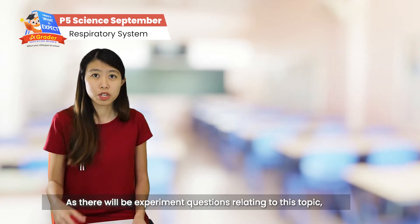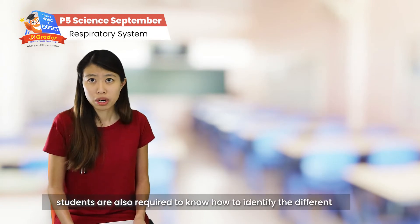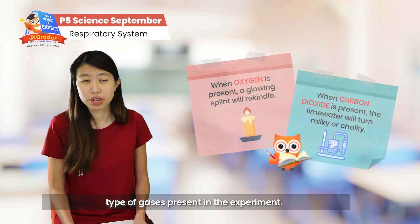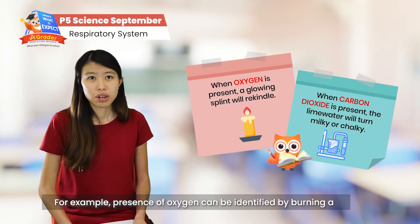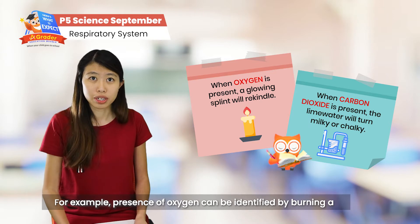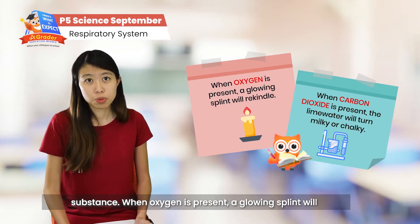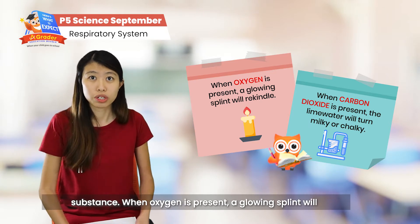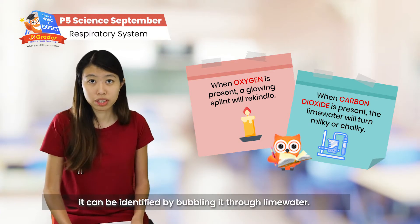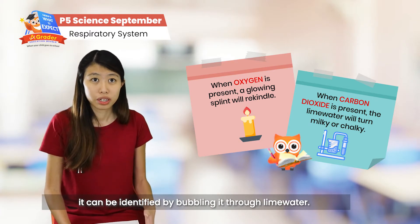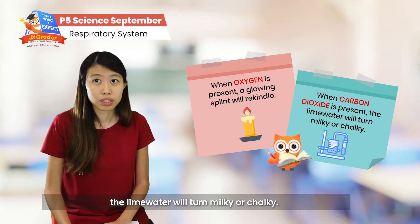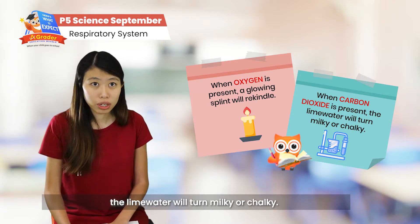As there will be experimental questions related to this topic, students are also required to know how to identify different types of gases present in an experiment. For example, the presence of oxygen can be identified by burning a substance — when oxygen is present, the glowing splint will actually rekindle. And for the test for carbon dioxide, it can be identified through bubbling the gas in lime water. When there is carbon dioxide present, the lime water will either turn milky or chalky.